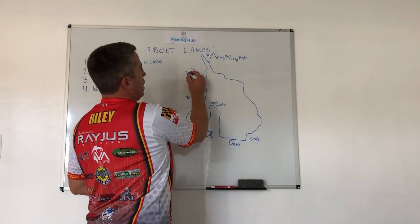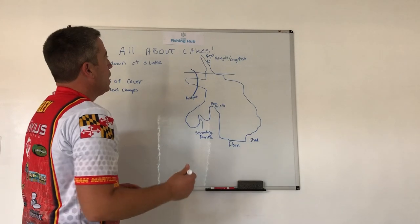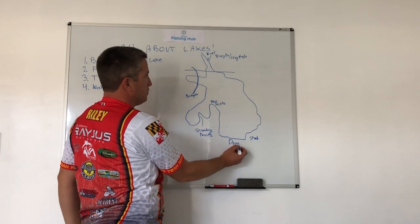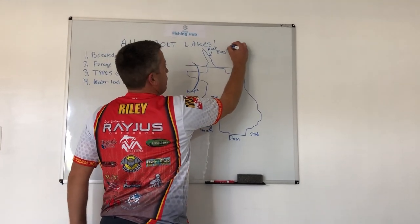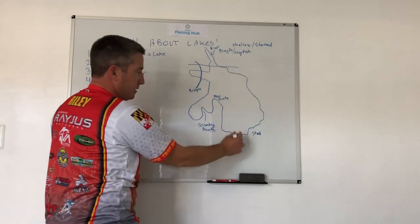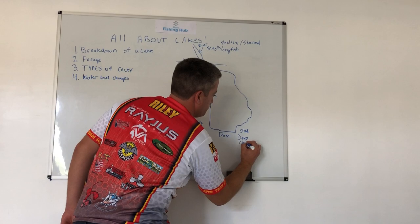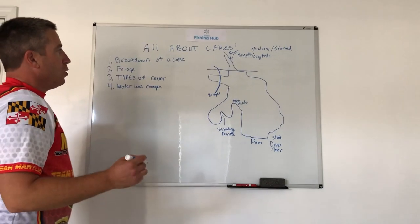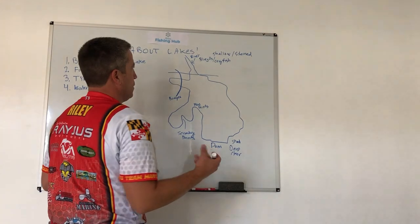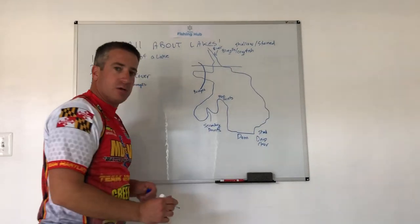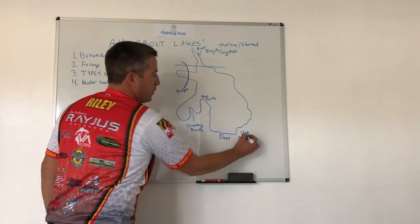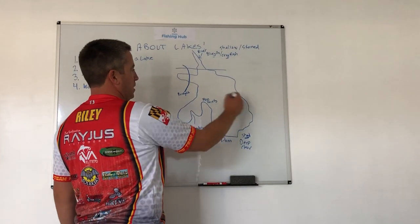The upper reaches of a lake make up the river section — one exclusive region of the lake. The polar opposite is down by the dam. In the river section you're going to have shallow and stained water, while down at the dam you'll have deep and clear water. Up in the river, baitfish are shallower because the water is dirty, and you're mostly imitating bluegills and crayfish. Down towards the dam where the water is clear, your primary focus should be on shad, because that's really where they school up and move around.